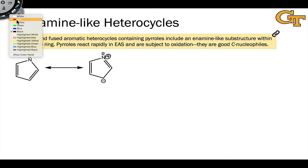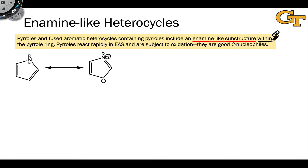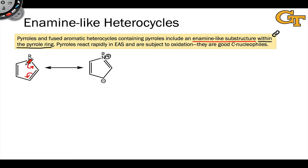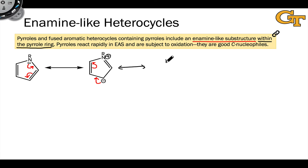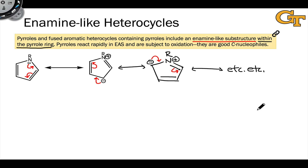Pyrrole is an enamine-like heterocycle, and within pyrrole we have an enamine built into the five-membered ring. Notice that if we push the lone pair on nitrogen over, we can generate a resonance structure in which we have negative charge on the alpha carbon with respect to the amino group that's actually built into the pyrrole ring. We can continue to push that negative charge around the ring to show that all of pyrrole's carbons bear some partial negative charge — so all four carbons in pyrrole are nucleophilic. In practice, it's the carbon adjacent to the nitrogen that's the best nucleophile, generally.